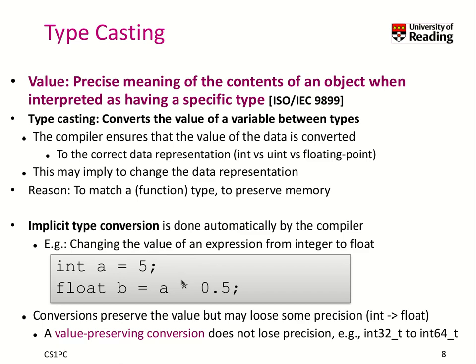Why would you want to store variables of different types in the first place? The reason could be that you need to match a given function type, or that you want to preserve memory — which is particularly relevant when talking about embedded devices.